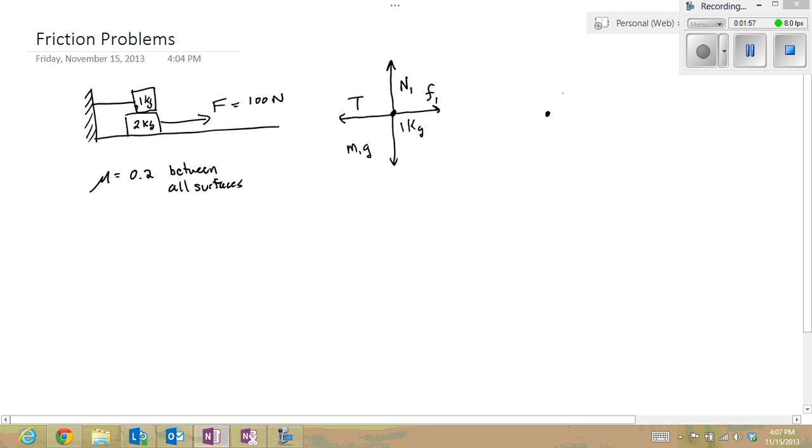So there's my free body diagram for mass of the 1 kilogram block. I'm going to do the same thing again. This time I'm going to do it for the 2 kilogram block. There's a downward force, which is M2G. There's an upward force, which is the ground pushing back on the block, which must be N2. There's the force to the right, which we call F. And there must be a force to the left, which is called F1.